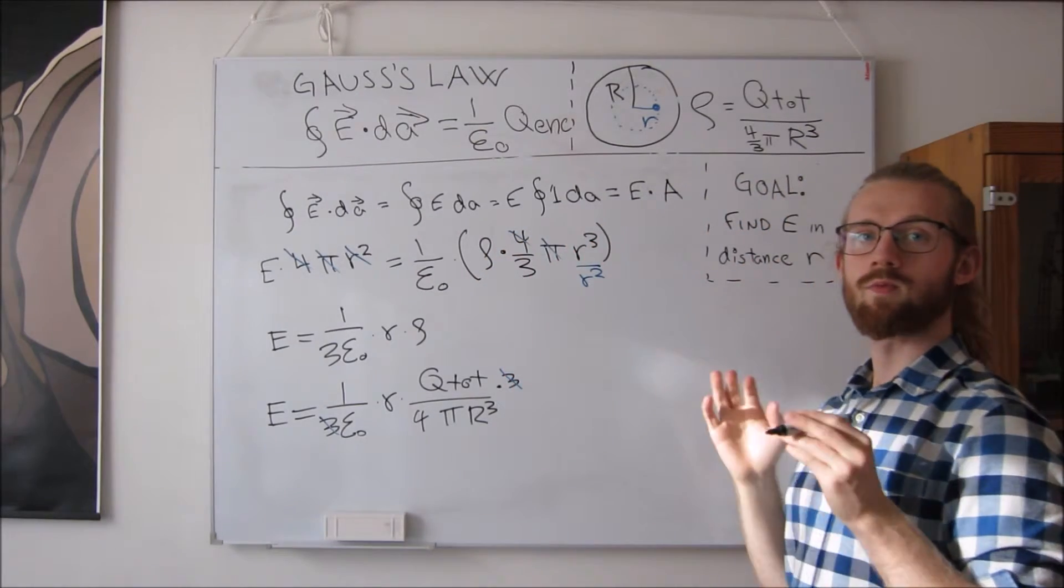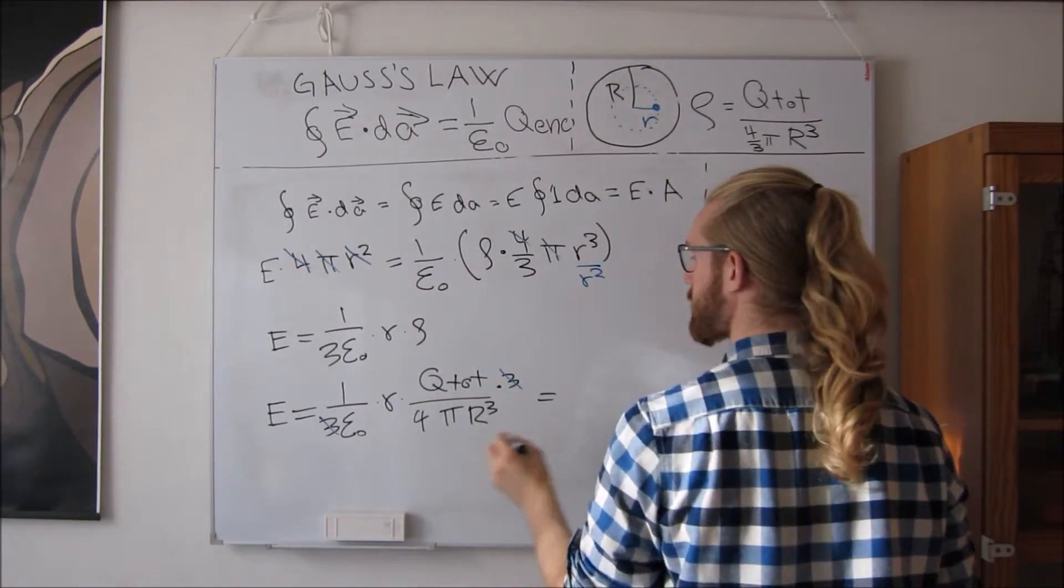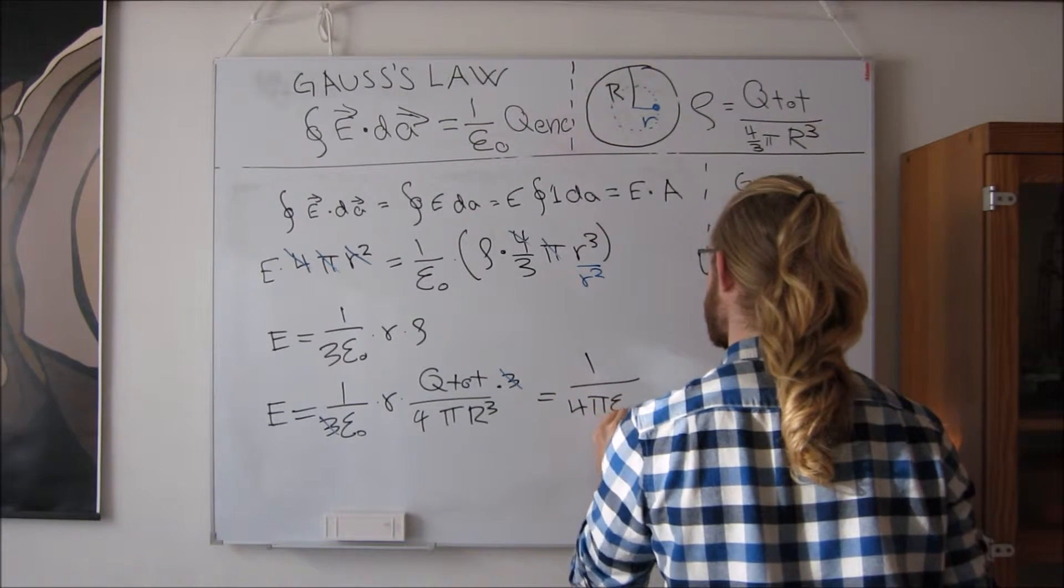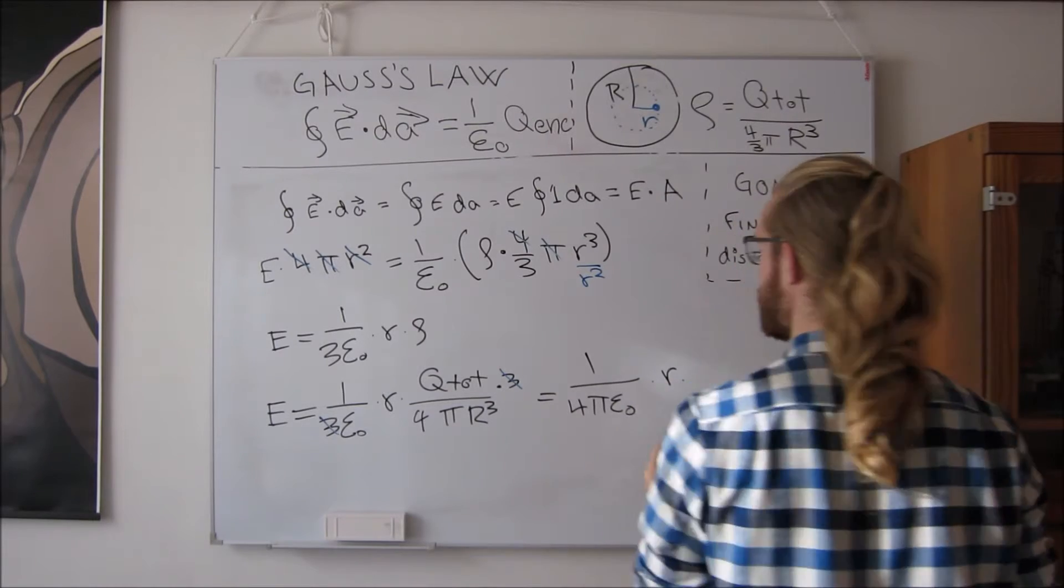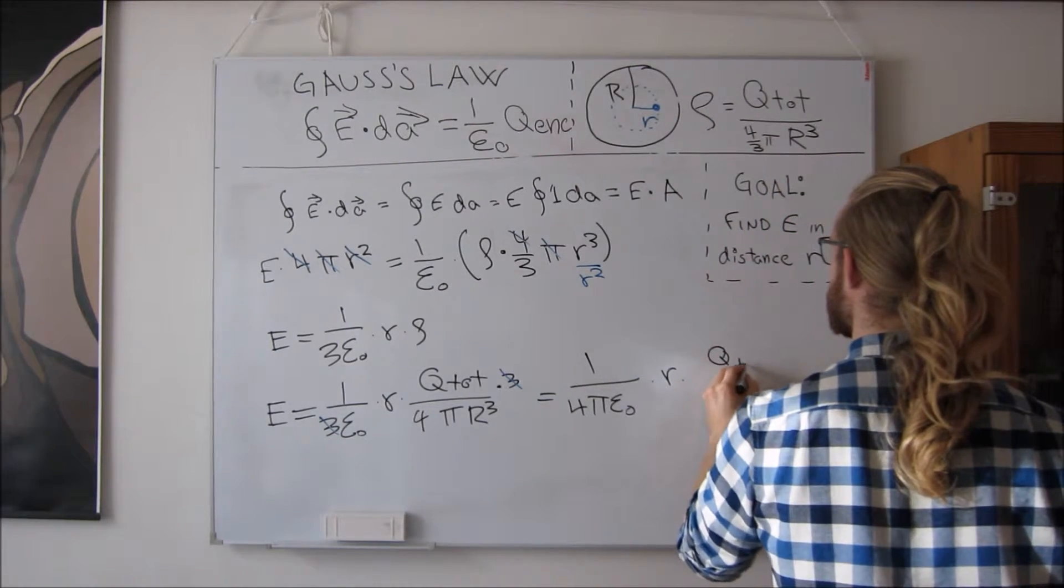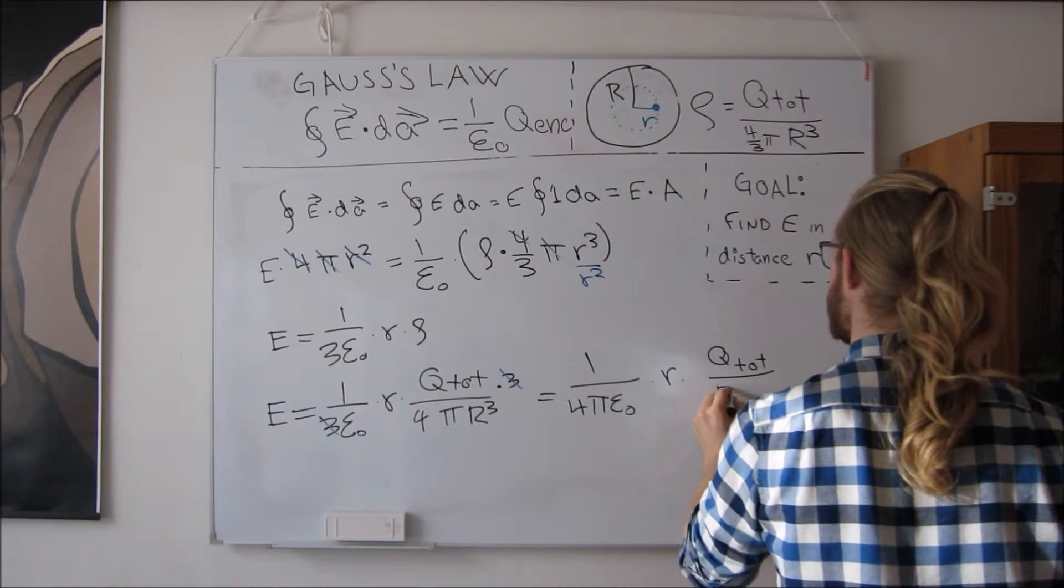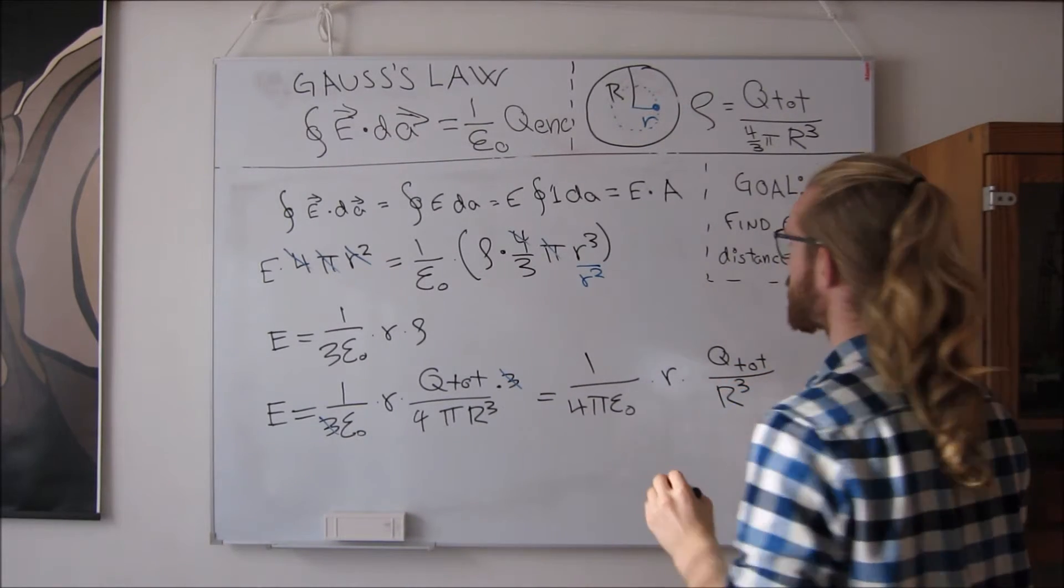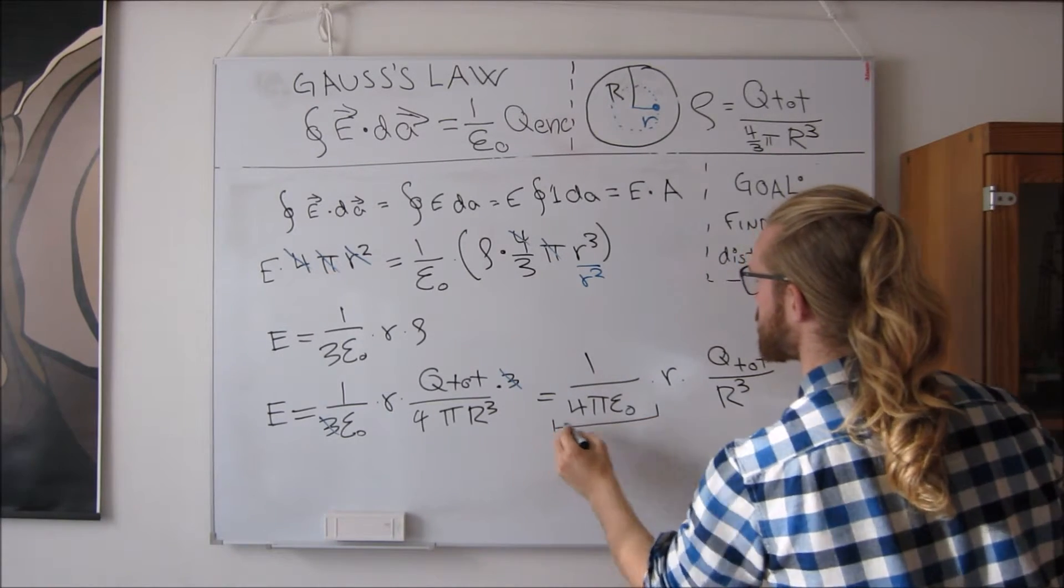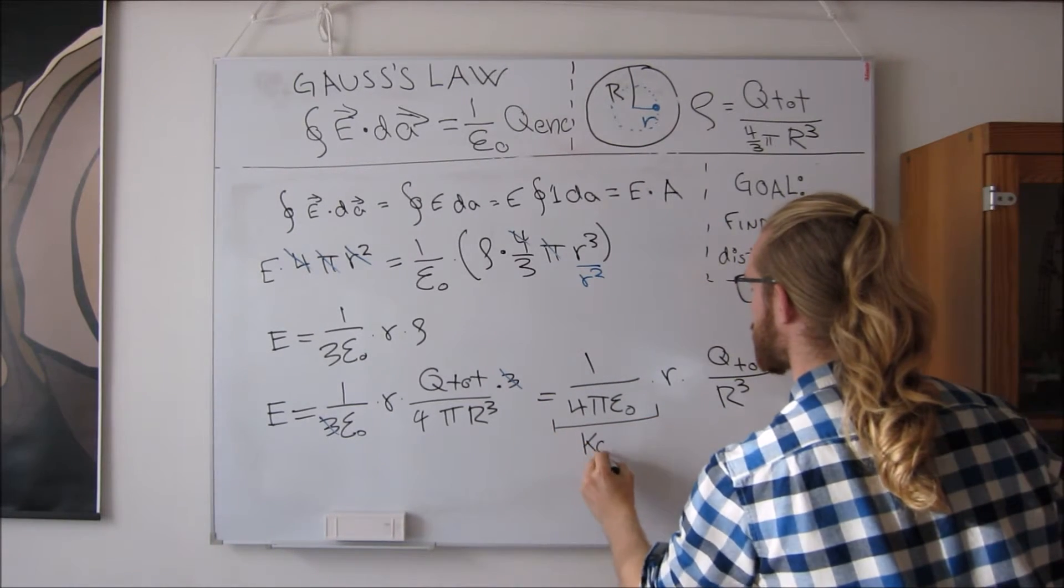And if we rearrange these constants, we can write it in terms of 1 over 4 pi epsilon, and then the distance to the center, the total charge, and the radius of the sphere cubed. Now we recognize this part as the Coulomb constant.